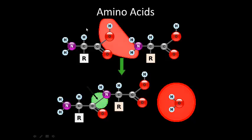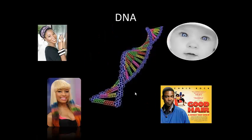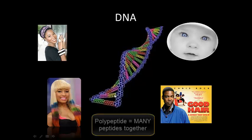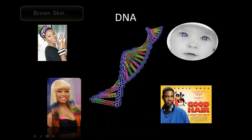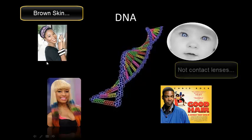The nitrogen part is the amine, and this part over here — C double bond OOH — that's your acid functional group. When you put those two together you get an amino acid. Those amino acids come together to form peptides. DNA is just a polypeptide.